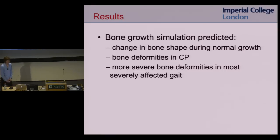The results show that our bone growth simulation could predict the changes in normal bone shape. As a child grows, their bone changes shape. In particular, the neck shaft angle decreases, and the anteversion — how much the femoral head is rotated — also changes. We could predict that with our models based on normal walking.